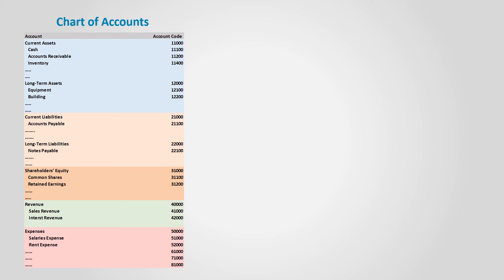If we take equipment as another example, equipment falls in the asset category so it starts with one, and since it falls in the long-term asset subcategory, it takes two — giving us one-two. The equipment could be the first account in this category, so it takes one, making the code one-two-one, then we add zero-zero. We can then add up to 99 types of equipment, from one-two-one-zero-one to one-two-one-nine-nine.